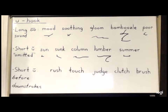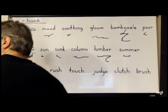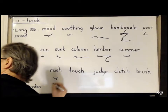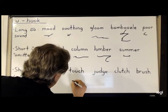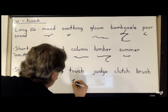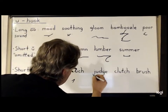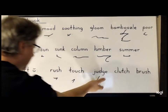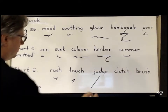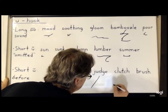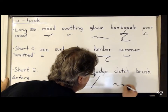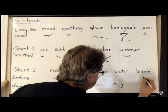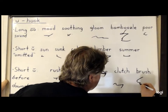Now the short U before downstrokes is also omitted. Like in 'rush', it is R, the U is omitted, and then S-H. For 'touch', it is T and then C-H. For 'judge', it is simply two J's put together because the U is omitted — J and then J. And for 'clutch', it is simply K, L, and then C-H. Finally, 'brush' is B, R, and then downward S-H.